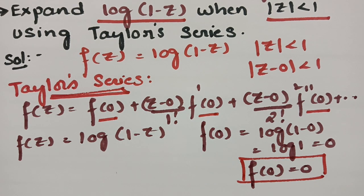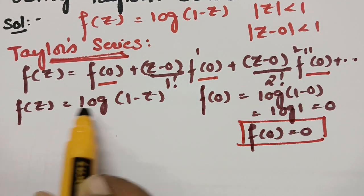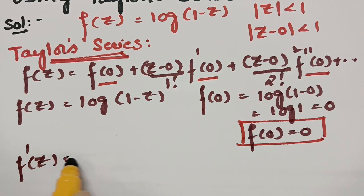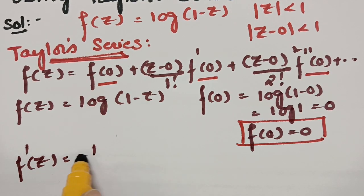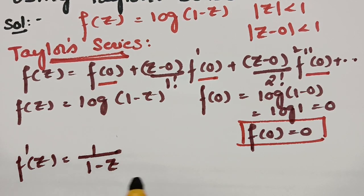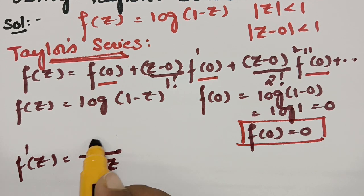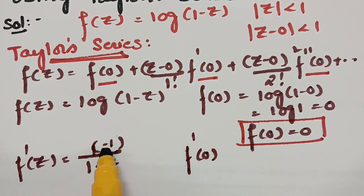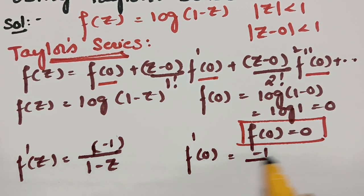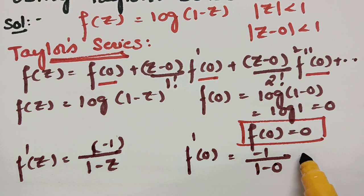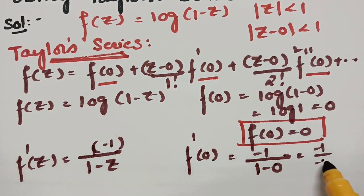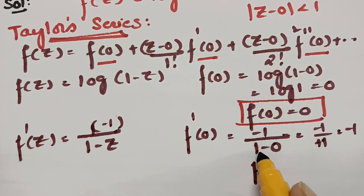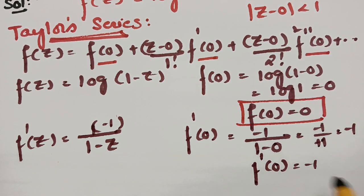Next, we find f'(0) by taking the derivative of f(z) = log(1 - z). The derivative of log(x) is 1/x, and applying the chain rule for (1 - z) gives a factor of -1. So f'(z) = -1/(1 - z). Substituting z = 0 gives f'(0) = -1/1 = -1.